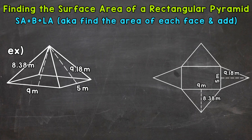When it comes to rectangular pyramids, we have five total faces: the base and four lateral faces. The lateral faces are the triangular faces going around the pyramid. We need to find the area of all of these and then add them together to get the total surface area. So let's jump into our example and start by writing out: surface area equals the area of the base plus the lateral area.